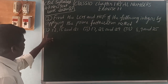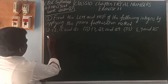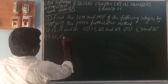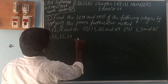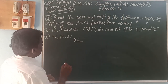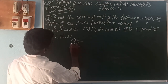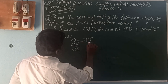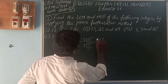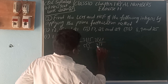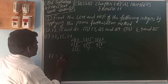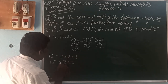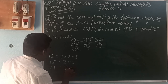First problem: given numbers are 12, 15, and 21. So 12 can be written as 2 into 2 into 3. 15 can be written as 3 into 5. 21 can be written as 3 into 7.